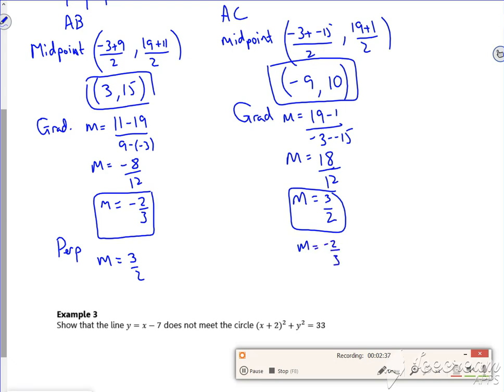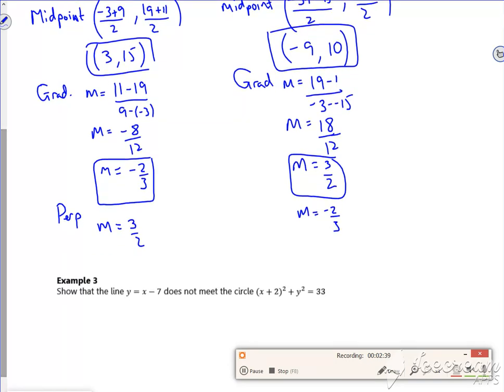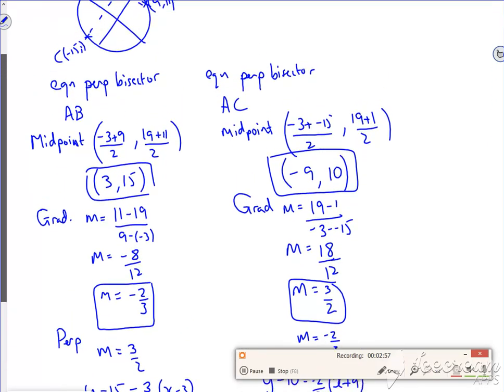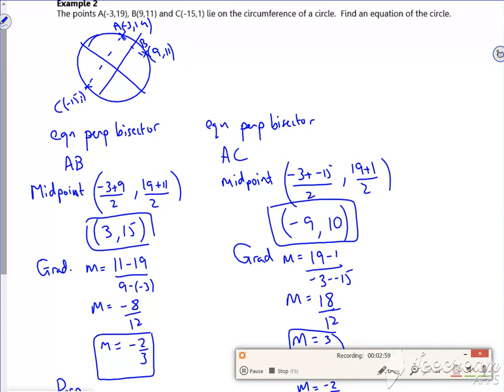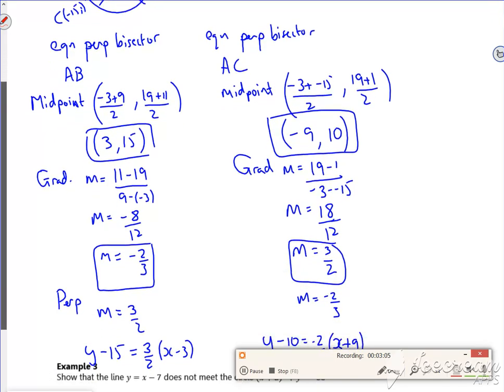So I chose the 1 pointer. And now I'm going to work out the equation. So I've got Y minus 15, it's going to go through the midpoint, X minus 3, and then Y minus 10 is minus 2 thirds, X plus 9. So there are my two equations that I've got. Now these are the two equations which go through the centre. So I've got my perpendicular bisectors, I now just need to solve these two equations.